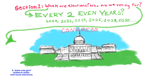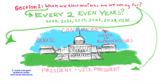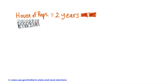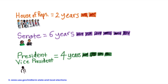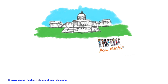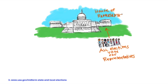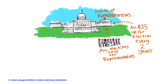In federal elections, you will vote for at least one and sometimes all of the following offices: Members of Congress, which includes the House of Representatives and the Senate, and the President and Vice President. All of these offices have different lengths of years of service, so you won't always be voting for them all at the same time, though sometimes you will. In each federal election, you will always be voting for representatives to the House of Representatives, because all 435 of them are up for election every two years.